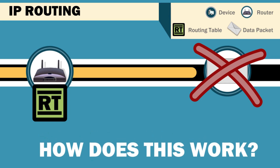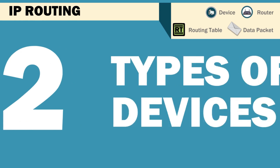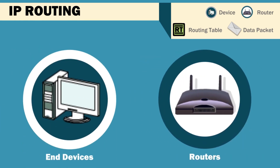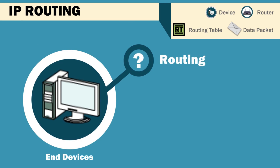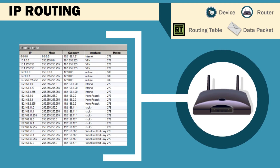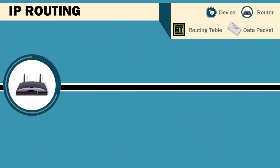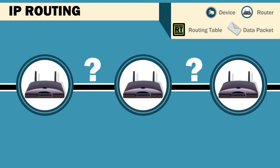Let's look at how this works. There are two types of devices on every network: end devices and routers. An end device doesn't know anything about routing other than its direct network connection and its gateway, which it uses to send packets out to other networks. Each router uses a routing table, which lists the routes to other network destinations, including its direct connections. However, because each router works independently, they can't read each other's routing tables.